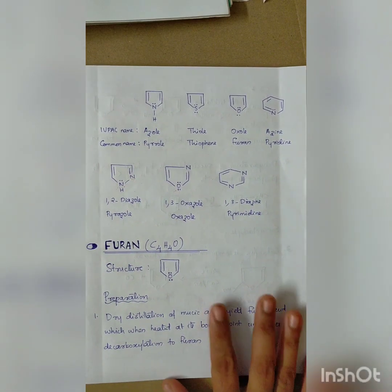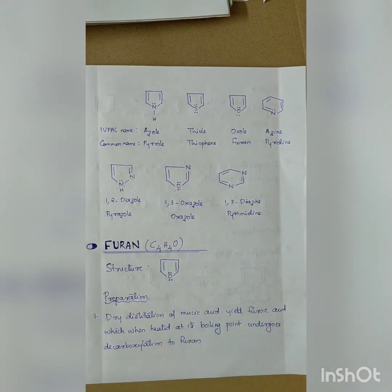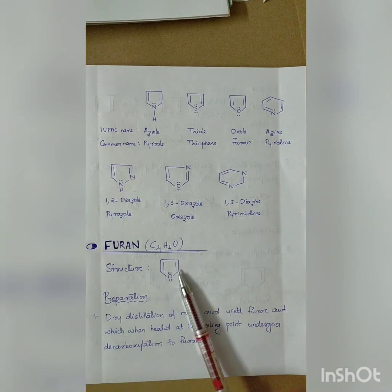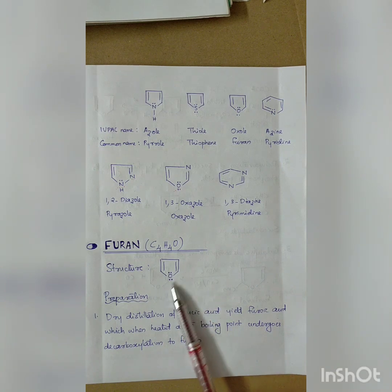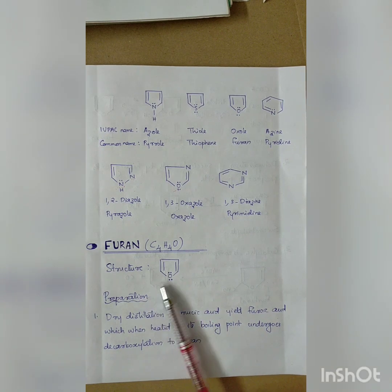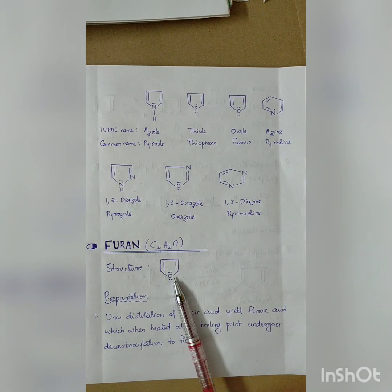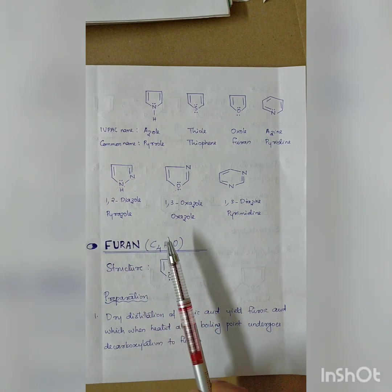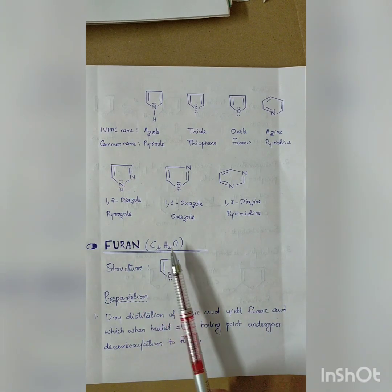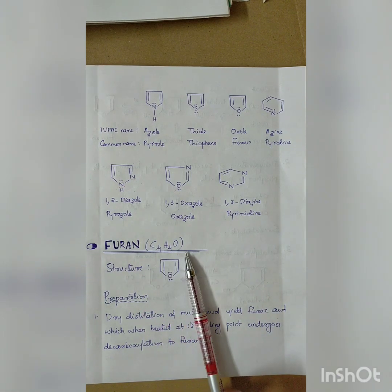This compound is called Furan. It is a 5-membered heterocyclic compound where the heteroatom is oxygen. The chemical formula of Furan is C₄H₄O.